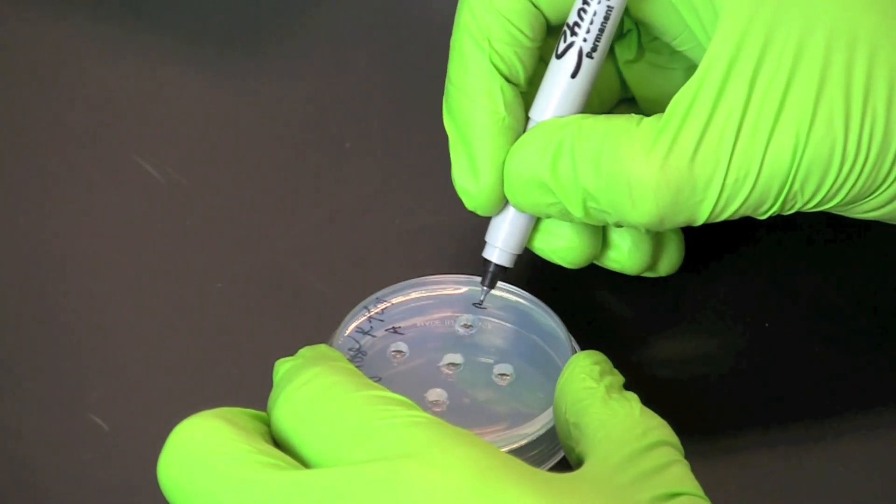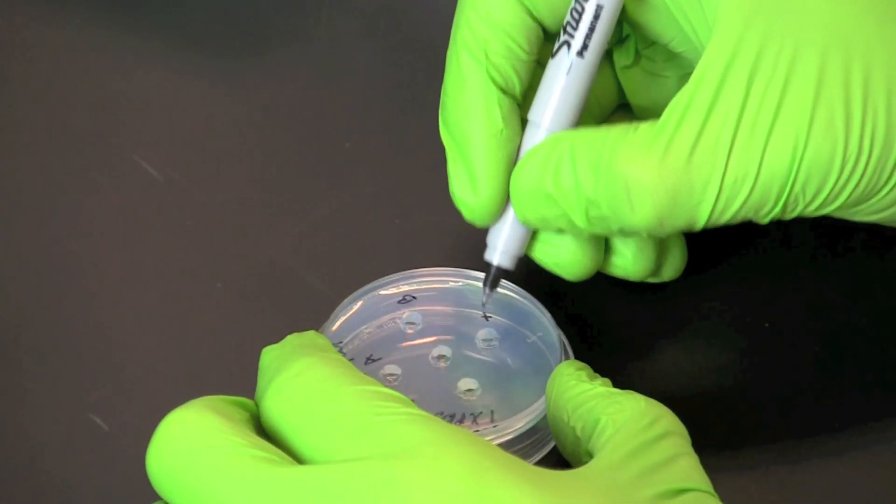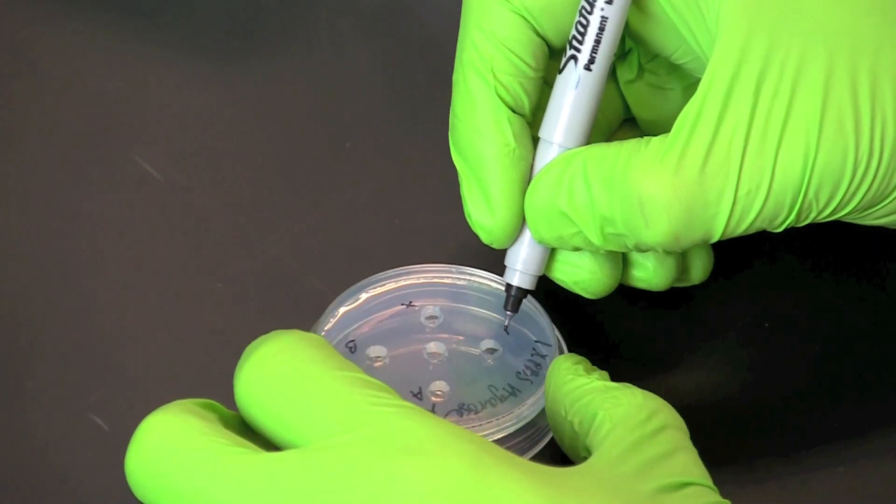Next, label the bottom of the plate for the positive and negative controls and samples A and B as shown.